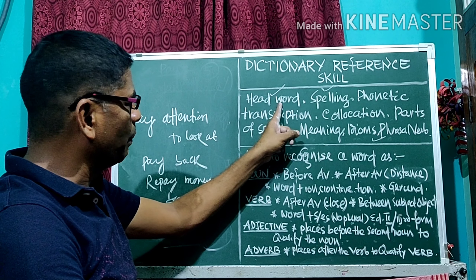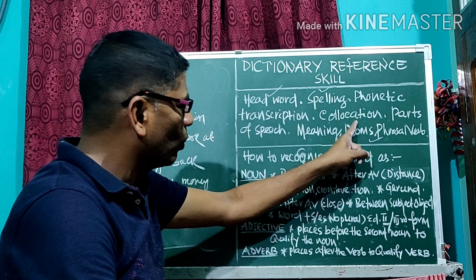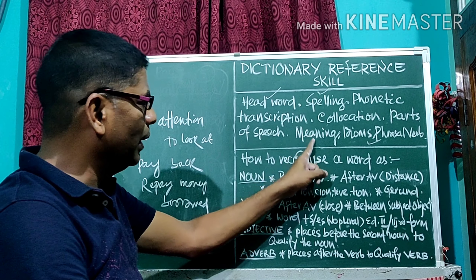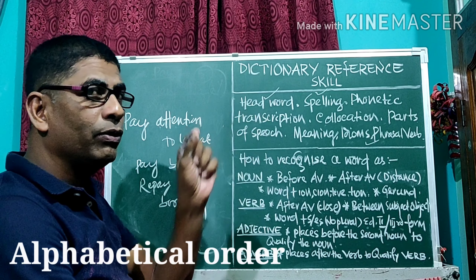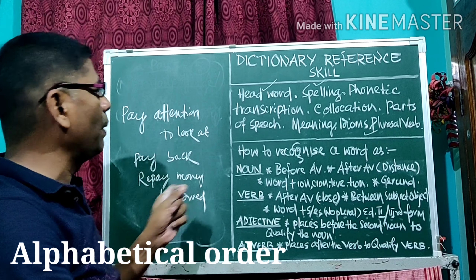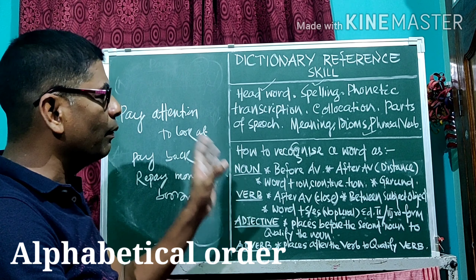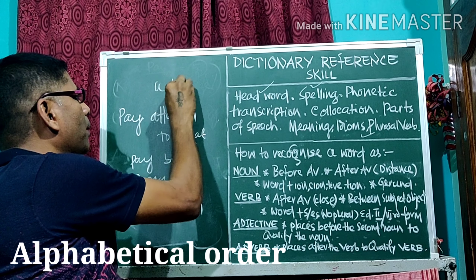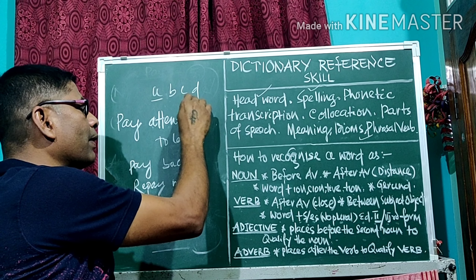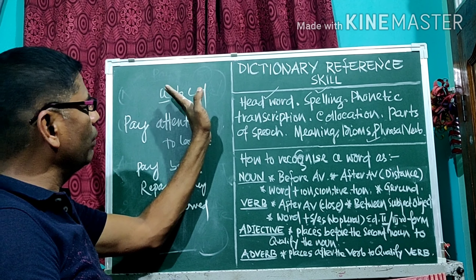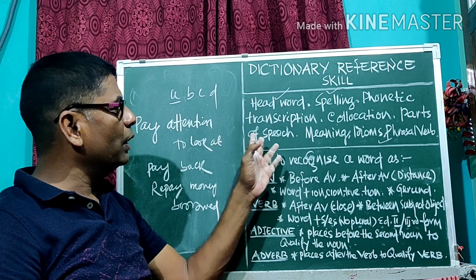To repeat once more: for the word 'pay', you can get the spelling, phonetic transcription, collocation, parts of speech and abbreviations, meaning, synonyms, antonyms, and idioms and phrasal verbs. The vital point is that whenever you want to find a word in the dictionary, you have to search alphabetically. The dictionary is arranged alphabetically — A, B, C, D — so if the first letter matches, go to the second letter, then the third, and so on to find the word easily.